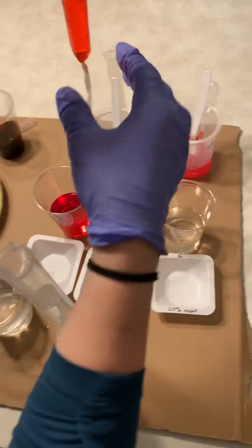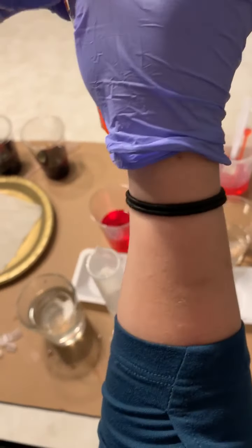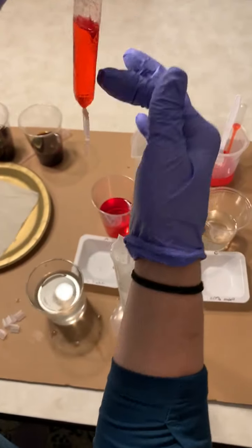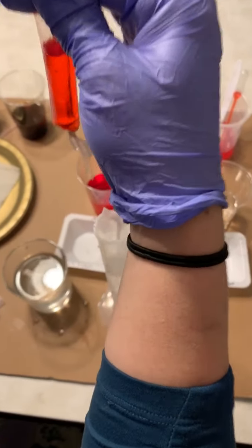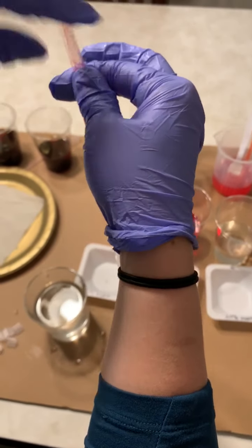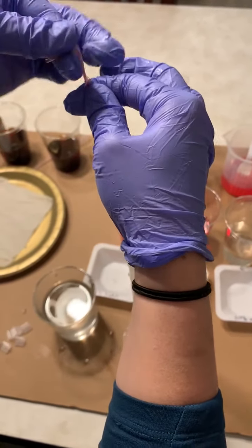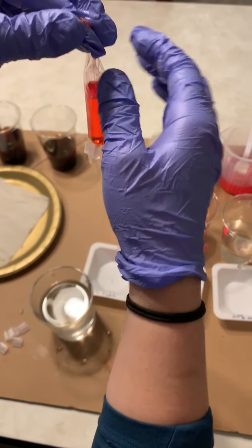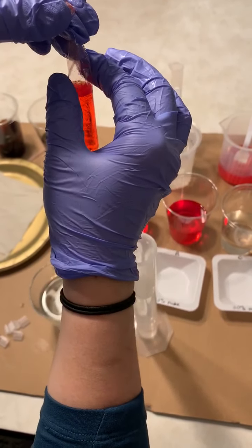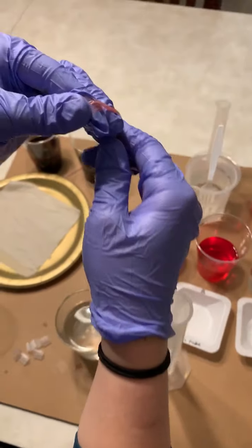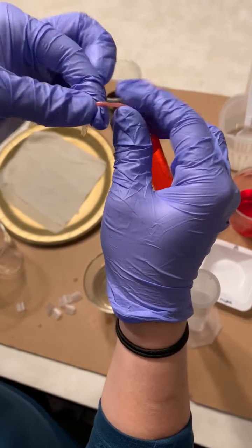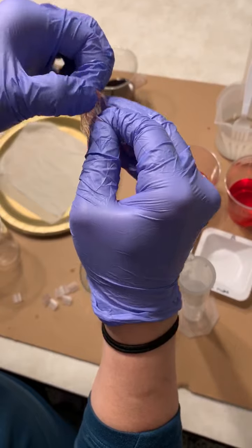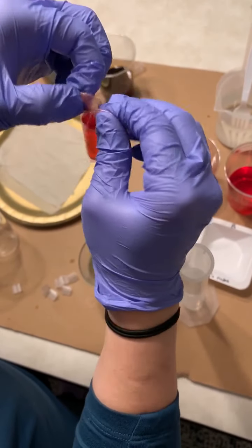So as you can see, I tied it off nice and tight. Nothing is leaking. All my solution, my 20% sucrose solution is in my tube, and now I'm going to do the same thing. I'm going to tie off this end if possible. It says to leave a little bit of an air bubble so the tube will float. So let's see if I can do this. If not, I'm just going to do a clip.